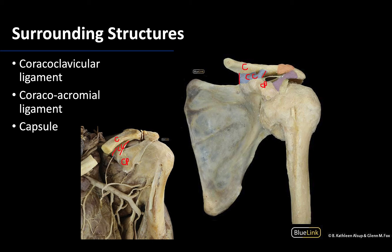Shaded in purple is the coracoacromial ligament, which extends between the coracoid process and the acromion. Here on this unshaded image you can really see the expanse of this ligament, and you can see how the coracoacromial ligament along with its bony attachment sites forms an arch — the coracoacromial arch — located right in this region. This allows structures going to or from the shoulder joint region to travel deep to the coracoacromial arch.